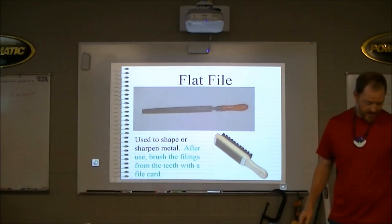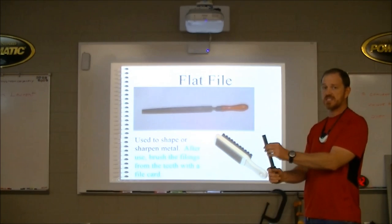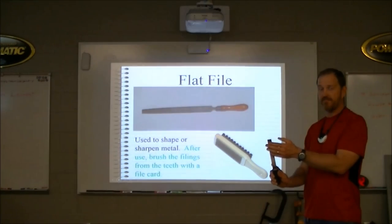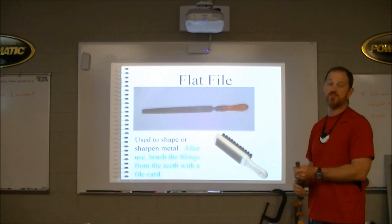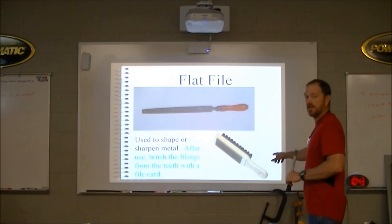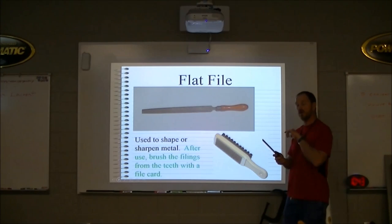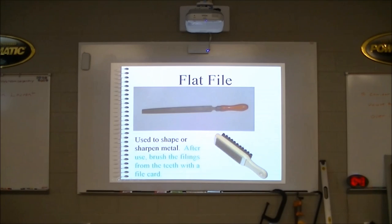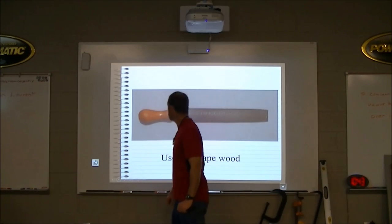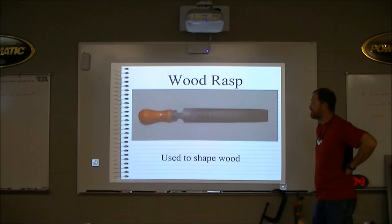This is a flat file. The one I have here is actually a wood rasp on one side and a flat file on the other. The wood rasp is much rougher. The rasp is used to shape wood; the file is used to shape metal. This is also a picture of a file card — I don't have one, but it's used to remove filings from the file so it doesn't become clogged. Pay special attention to that. A wood rasp is similar to a file but is used for wood.